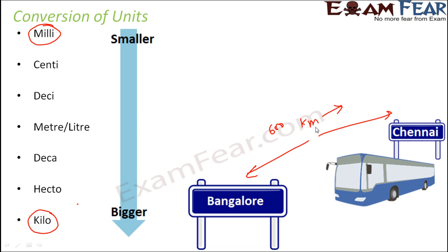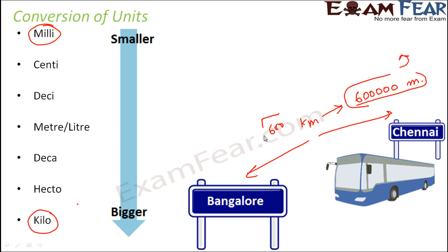These units can be converted from one to another. For example, 600 kilometres can be written in metres as 600 times 1000 metres. If we write it in millimetres the number becomes very huge and difficult to remember, which is why we use bigger units — so the number stays small, like 600, while the unit kilometre conveys the larger quantity in a convenient way.